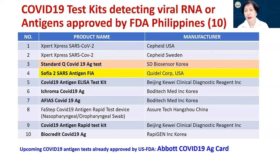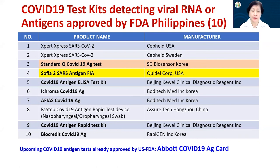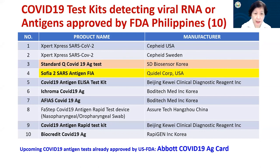For COVID-19 antigen tests on the Philippine FDA website, the Standard Q COVID-19 Antigen Test is now available — developed by SD Biosensor from Korea. After using antibody tests from around June to July, some companies have shifted to using this antigen test for monitoring their employees. There is another one approved in the Philippines: the Sofia 2 SARS Antigen test, a fluorescent immunoassay developed by Quidel Corporation in the US. Others are from Korea, Japan, and China.